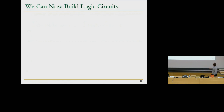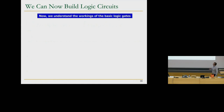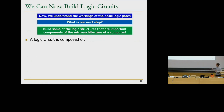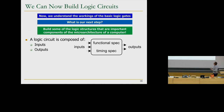Let's get back to combinational logic — we have a lot to cover. Now we can build logic circuits, and we really understand the workings of the basic logic gates. We want to build logic structures that are important components of the microarchitecture of a computer. A logic circuit is composed of inputs, outputs, and two specifications: functional specification and timing specification. Today we'll cover functional specification; next week we'll talk about timing.